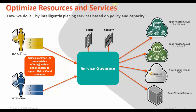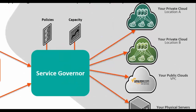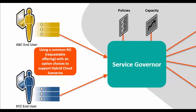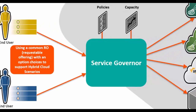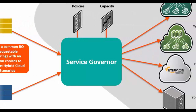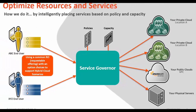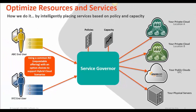On the right-hand side I've got private cloud location A, location B, and public cloud — using Amazon Web Services in this example. On the left-hand side I've got two users, user ABC and user XYZ, both using a common requestable offering with option choices to support hybrid cloud scenarios. In the middle of the screen I'm using Service Governor, which will help you place your services based on policies and capacity.